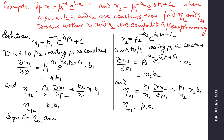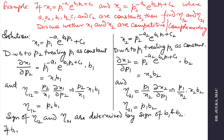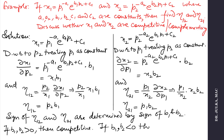The signs of η12 and η21 are determined by the signs of B1 and B2. If B1 and B2 are both positive then products are competitive, and if B1 and B2 are both negative then products are complementary.